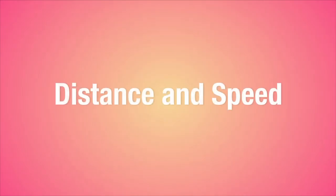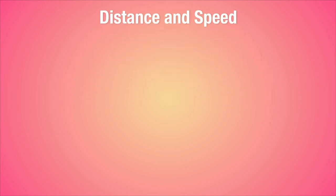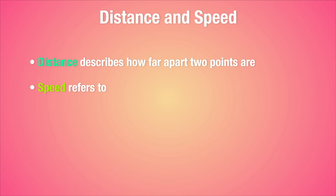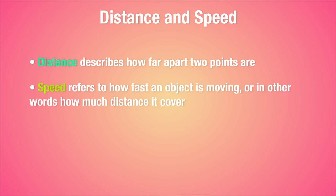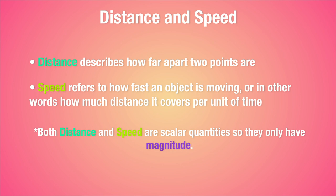Now we use words like distance and speed in our daily lives, and we have a pretty good understanding of what they are. Distance describes how far apart two points are, and for a moving object, it describes how far that object has travelled. Speed refers to how fast an object is moving. In other words, how much distance it covers per unit time. But both these measures only deal with the magnitude of travelling, not the direction, and are therefore scalar quantities.